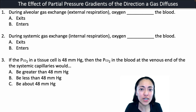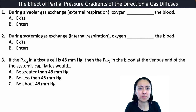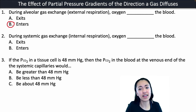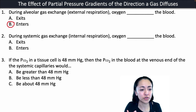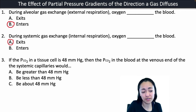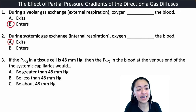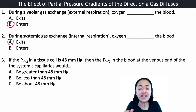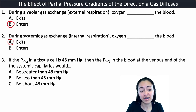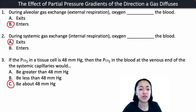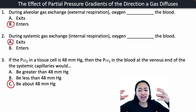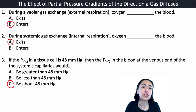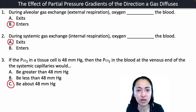Let's answer these review questions. Number one: during alveolar gas exchange, oxygen does what to the blood? Oxygen should enter the blood during alveolar gas exchange — that's how our blood becomes oxygenated, driven by its partial pressure gradient. Number two: during systemic gas exchange, oxygen does what to the blood? Oxygen exits the blood, leaving to go to our tissue cells. Number three: if the partial pressure of carbon dioxide in a tissue cell is 48 millimeters of mercury, then the partial pressure of carbon dioxide in the blood at the venous end of the systemic capillaries would be about 48 millimeters of mercury — because carbon dioxide keeps leaving the tissue cells and entering the systemic capillaries until the partial pressures equalize.